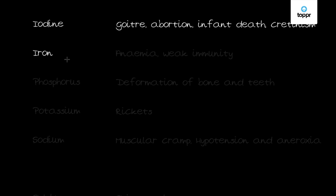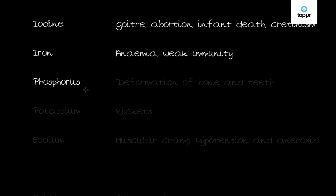Next is iron. Iron is required as a component of the respiratory pigment hemoglobin. It also acts as a respiratory enzyme such as cytochromes and is involved in oxygen transport. The deficiency of iron causes anemia and weak immunity.